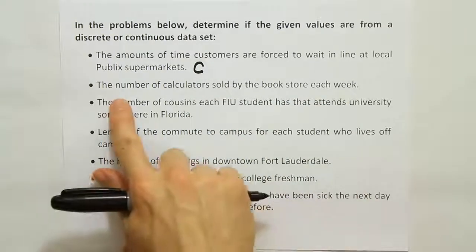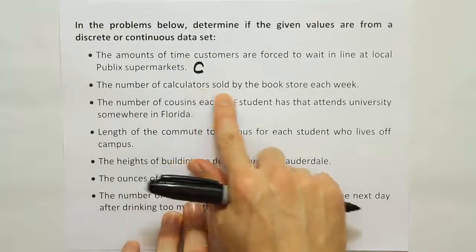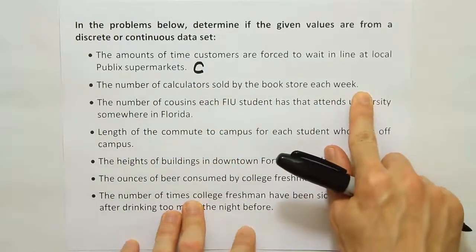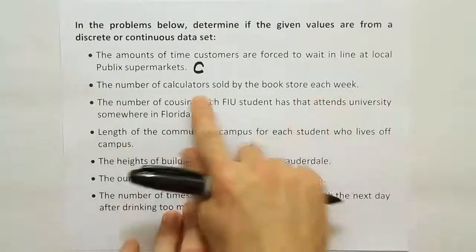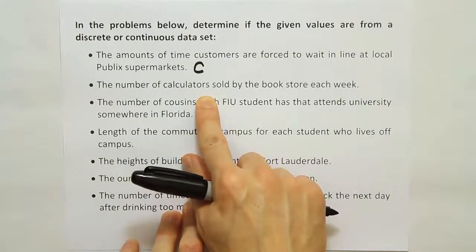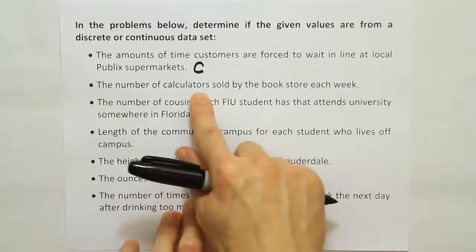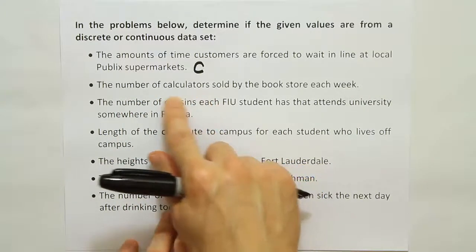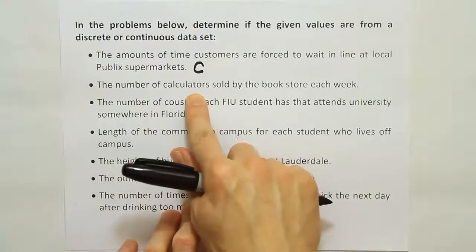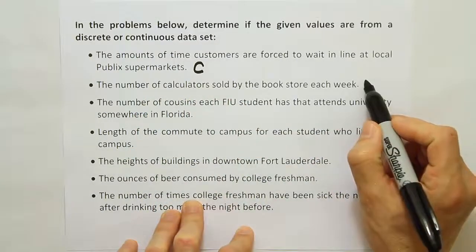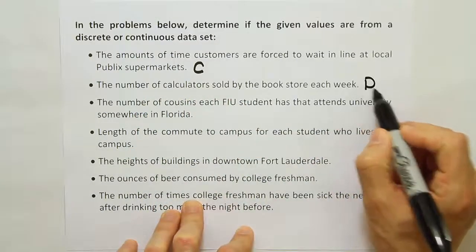The second example says the number of calculators sold by the bookstore each week. Wouldn't we count the number of calculators? We would count it up — one calculator sold, two calculators, three or four calculators. We'd have to count how many calculators were sold. So that's going to be discrete data.